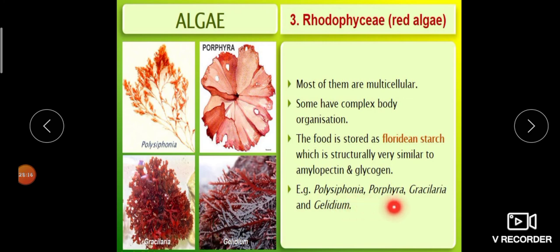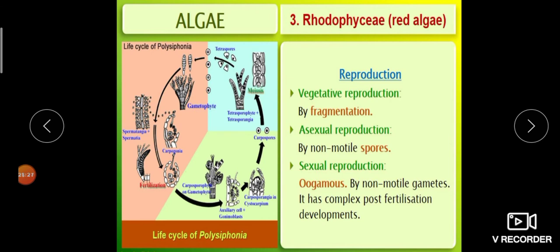The stored food in Rhodophyceae is floridian starch, which is structurally very similar to amylopectin and glycogen. Examples: Polysiphonia, Porifera, Gracilaria, and Gelidium — all red in color. Gracilaria and Gelidium are used for the production of agar. Reproduction: vegetative by fragmentation, asexual by non-motile spores, sexual by oogamous method with non-motile gametes and complex post-fertilization development.